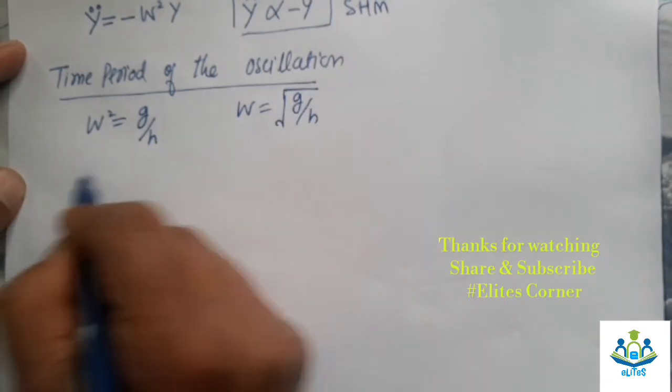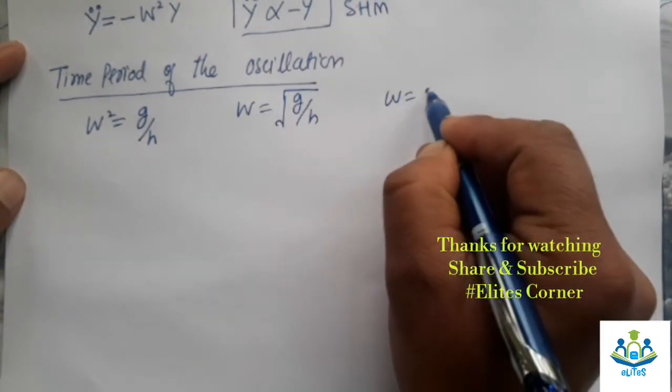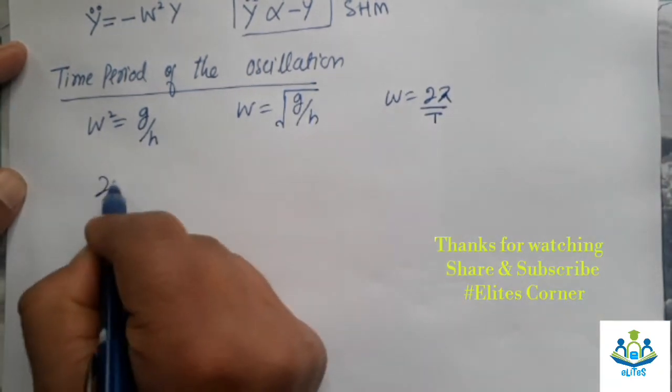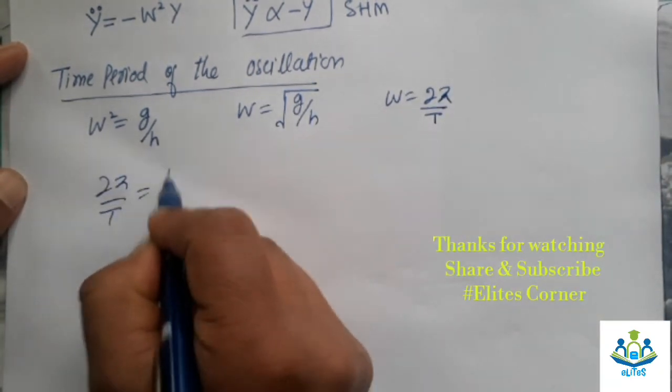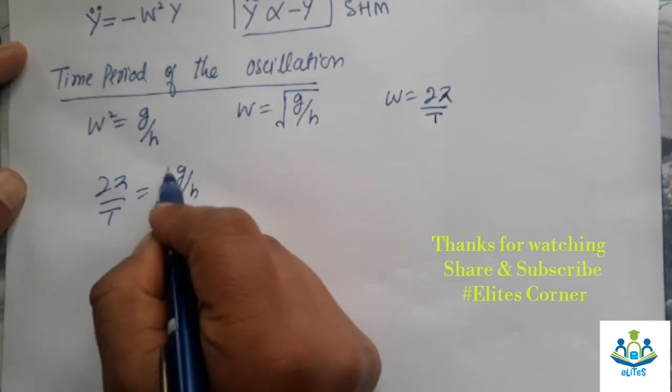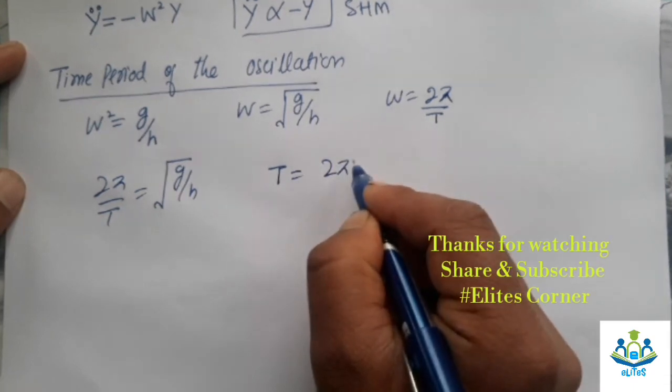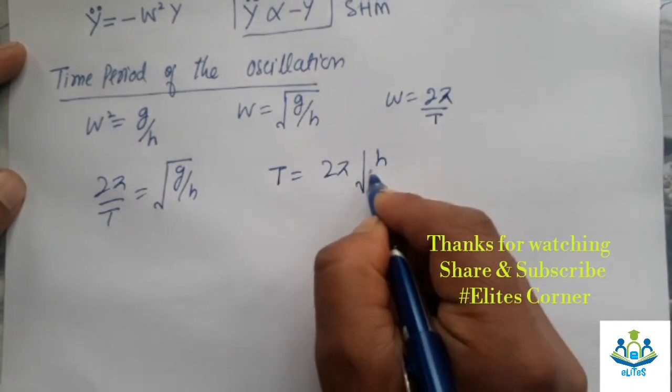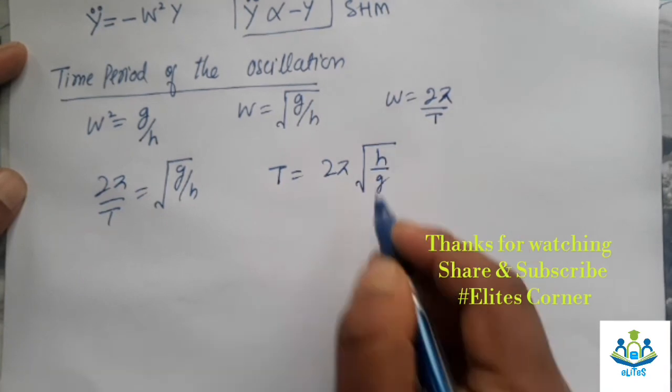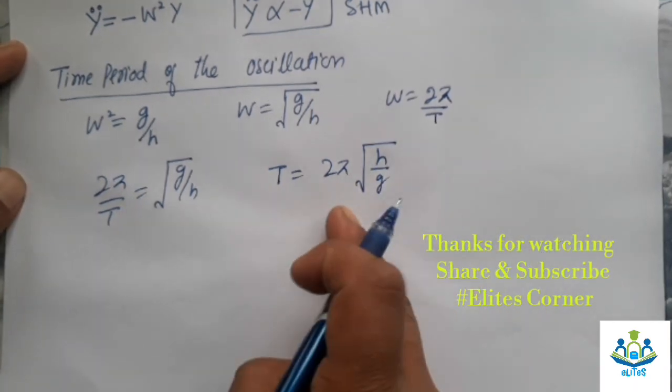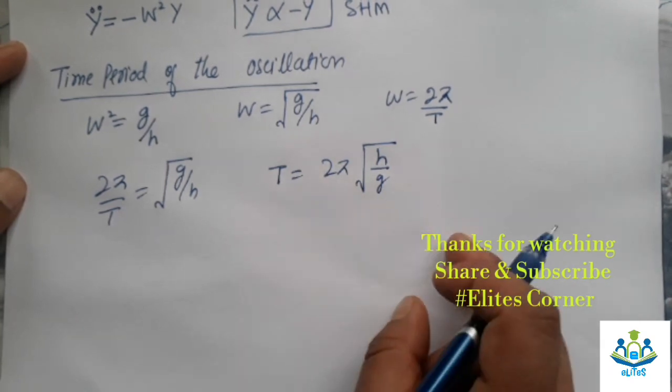But ω is 2π over T. So 2π over T will be equal to √(g/H). Taking reciprocal, time period will be 2π√(H/g). So this is the time period of the liquid in U-tube.